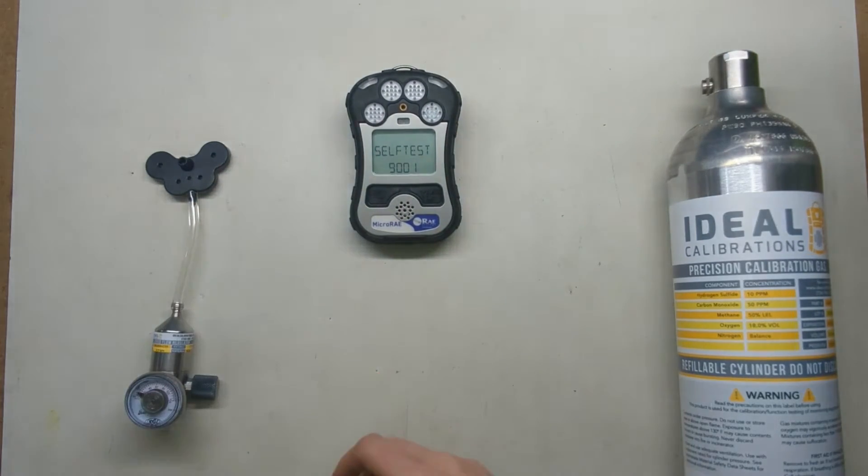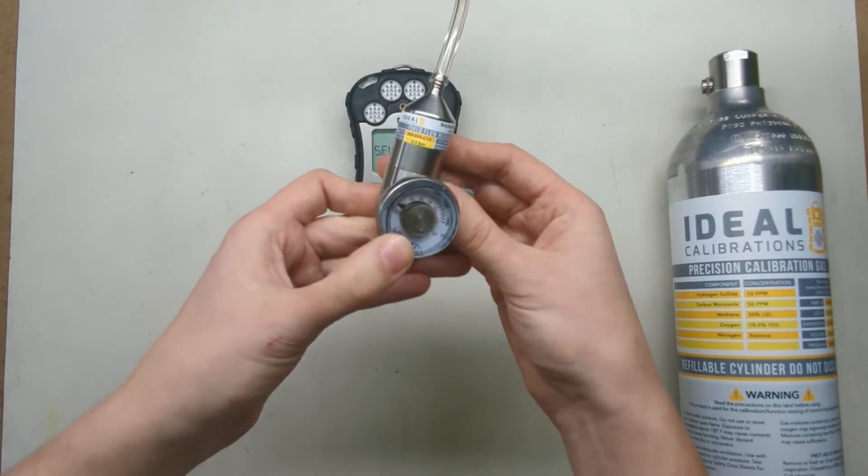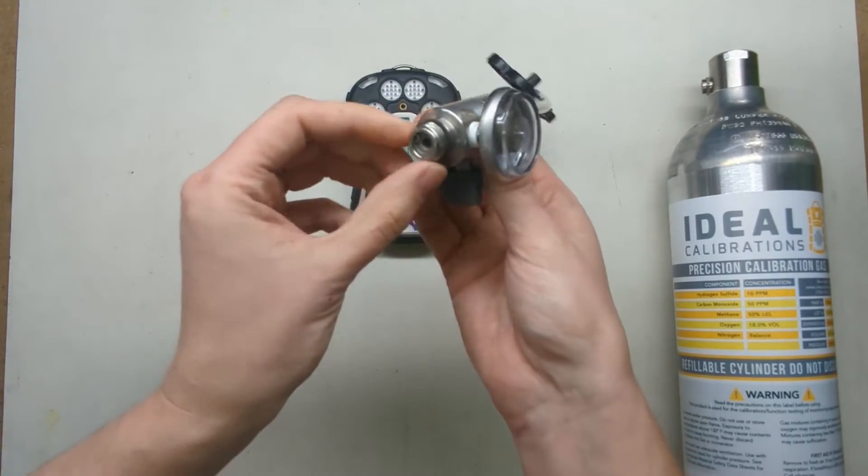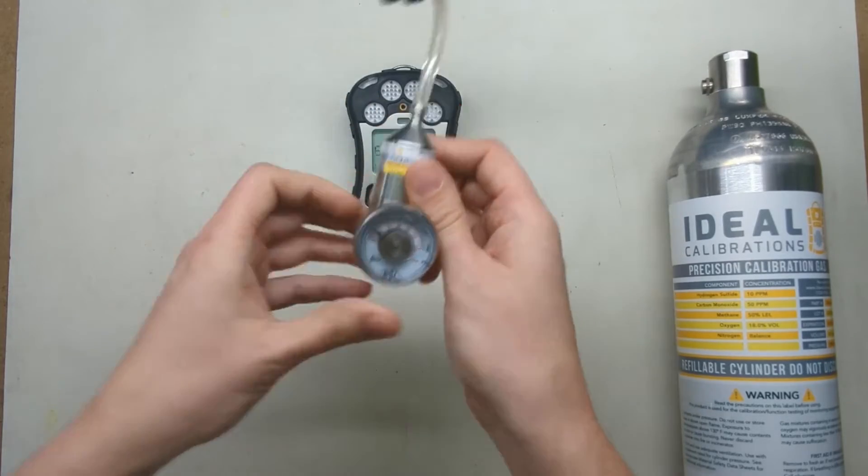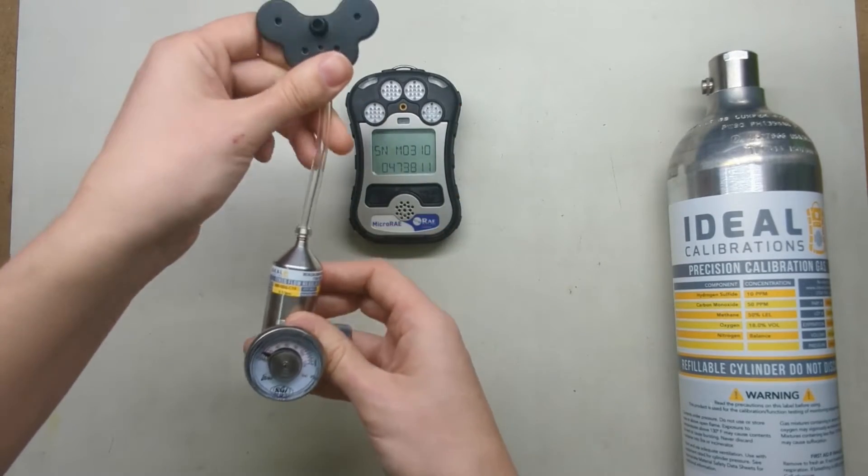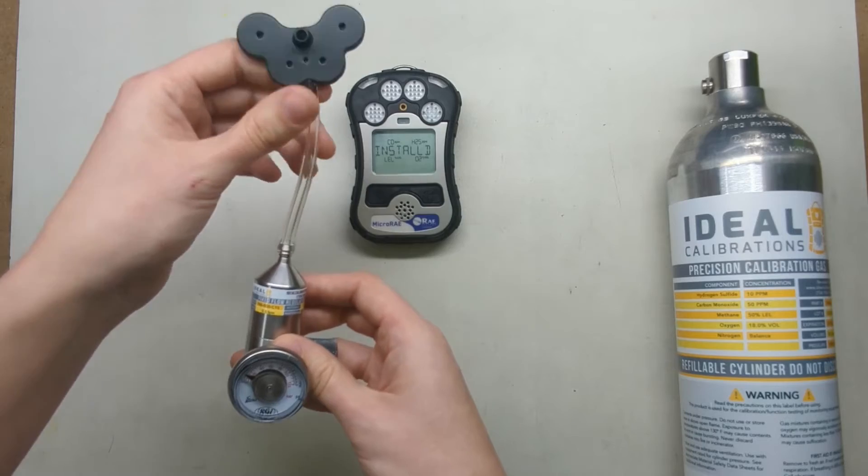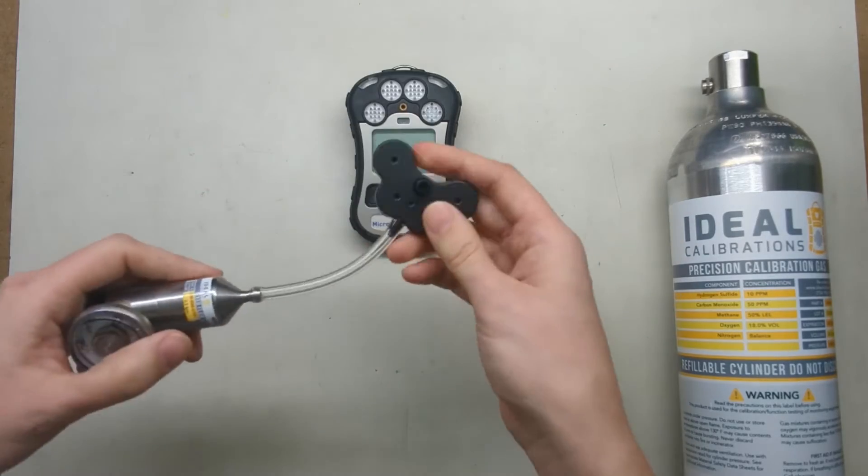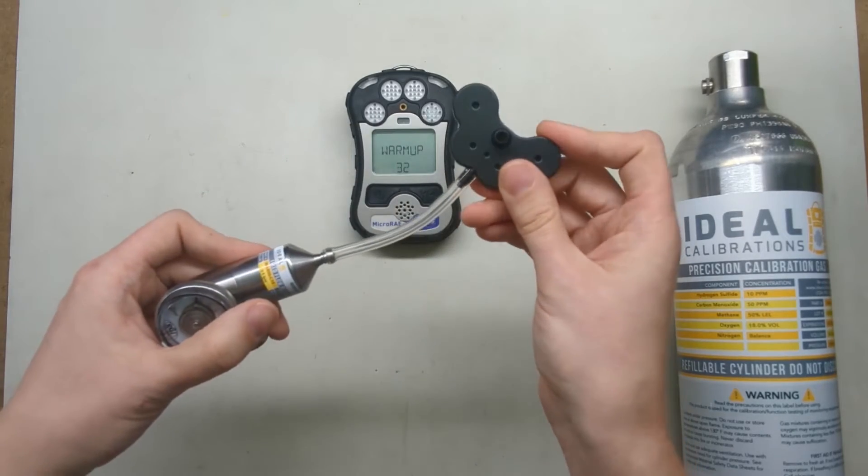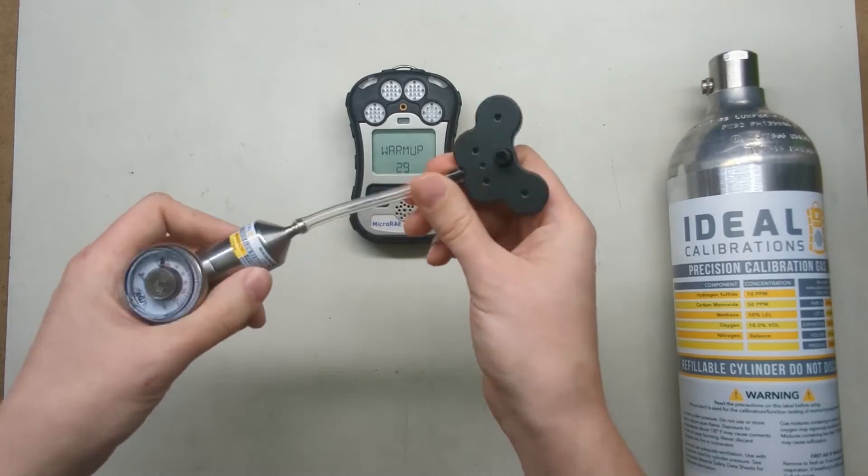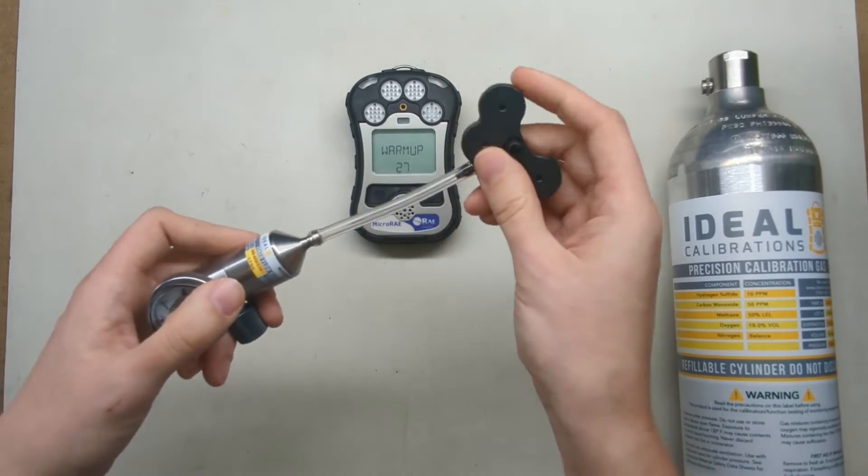In the meantime, we've got a regulator here. This is a 0.5 liter nickel brass C10 inlet regulator. You can get these from us, part number NB-050-C10. Up here we have the calibration adapter for the MicroRay unit. I don't know the part number off the top of my head, but I'll put it in the show notes.